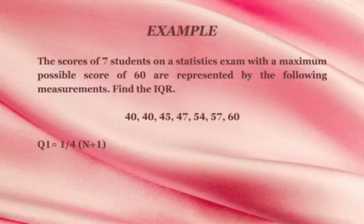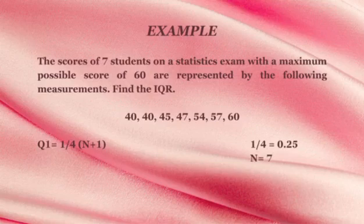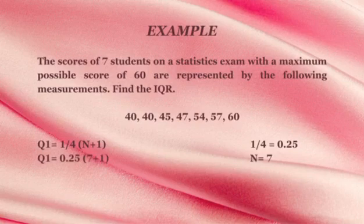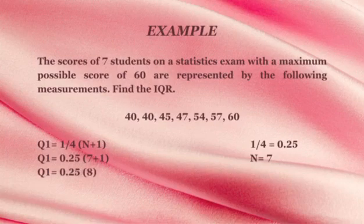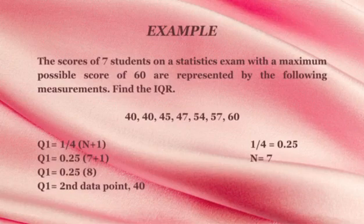First, we need to solve for the Q1. The formula is 1/4 times n plus 1. 1/4 is equal to 0.25 and n is equal to 7. Therefore, we substitute it in the formula. Q1 is equal to 0.25 times 7 plus 1. 7 plus 1 is 8. Therefore, Q1 is equal to 0.25 times 8, and we get the answer. Q1 is equal to the second data point or 40.